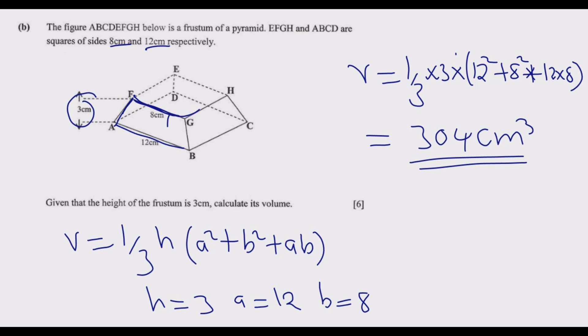This is how you find the volume of the frustum to get the six marks as quickly as possible.